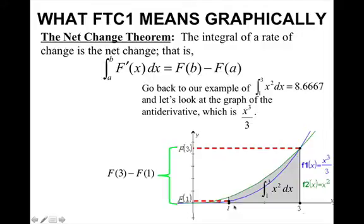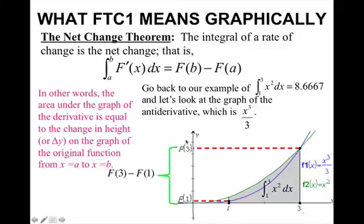And what this also means is now if I was to graph the integral or the derivative x squared, which is the green curve, and I would calculate the area underneath x squared from 1 to 3, that area represents the same value as the change of y on the original curve. In other words, the area under the graph of the derivative is equal to the change in height or change in y on the graph of the original function from a to b.